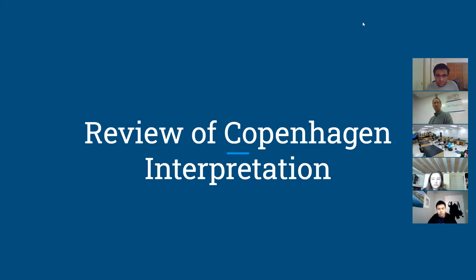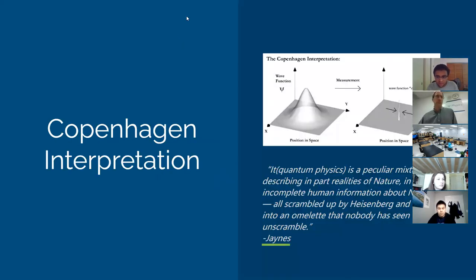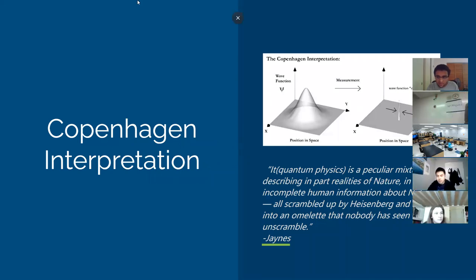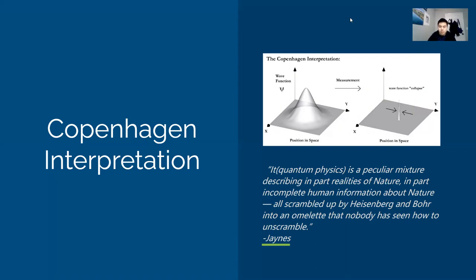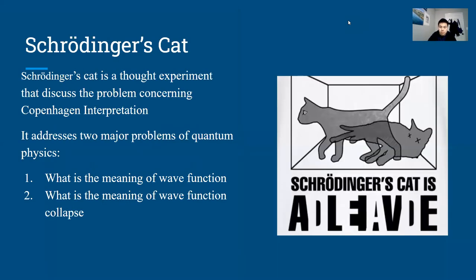Okay, so now we're going to review the Copenhagen interpretation. The Copenhagen interpretation is basically the explanation of the meaning of what quantum mechanics actually means in the real world. In order to understand it, we first need to know Schrödinger's cat — a thought experiment that discussed a problem containing the Copenhagen interpretation. A cat cannot be determined as live or dead before you open the box.